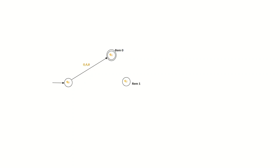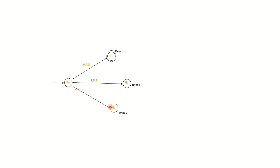From initial state q0, on reading 0, 4, or 8 we reach remainder-0 state q1. On reading 1, 5, or 9 from q0 we reach remainder-1 state q2. On reading 2 or 6 we reach remainder-2 state q3, and on reading 3 or 7 we reach remainder-3 state q4. For example: 8 divided by 4 gives remainder 0; 4 divided by 4 gives remainder 0; 6 divided by 4 gives remainder 2; 7 divided by 4 gives remainder 3.